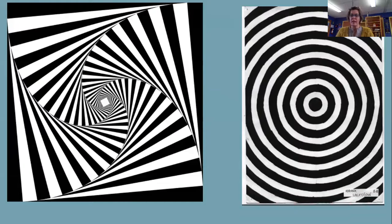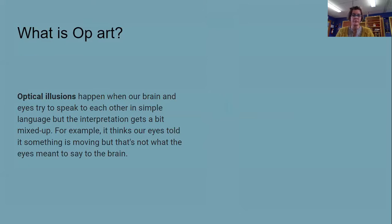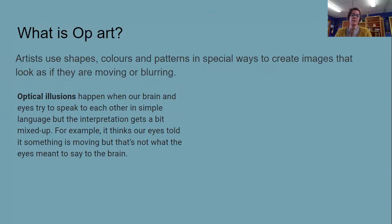So here are two great examples of op art and you may notice that your eyes might do something funny, they might look like they're moving, and that is because your eye is communicating to your brain and when you have an optical illusion what happens is that that message gets a little bit mixed up. That's when artists use shapes and colors and patterns in special ways to create images that look like they might be moving or blurring, fading away from you.